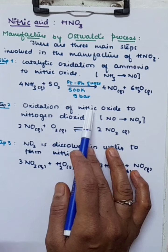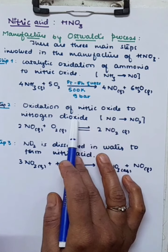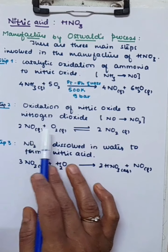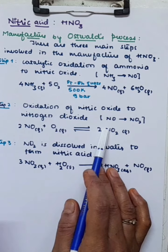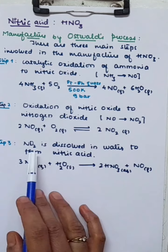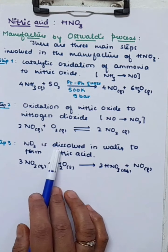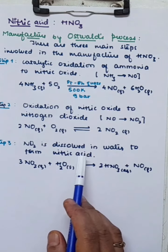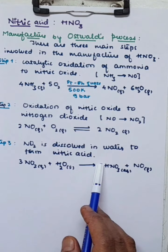Step 2 is the oxidation of nitric oxide. The nitric oxide formed is oxidized to nitrogen dioxide. In step 3, nitrogen dioxide is dissolved in water to form nitric acid.